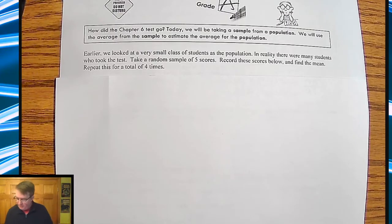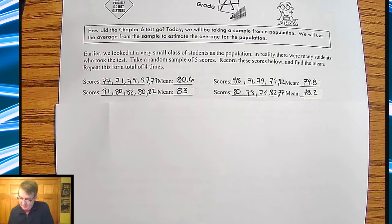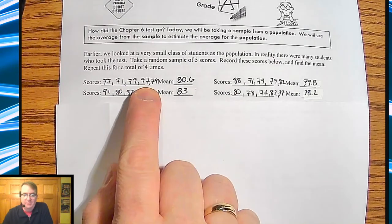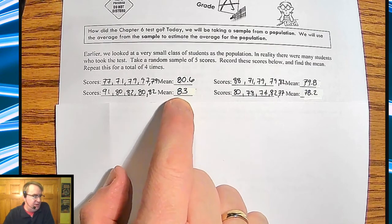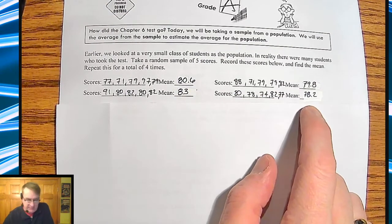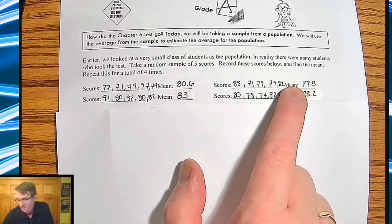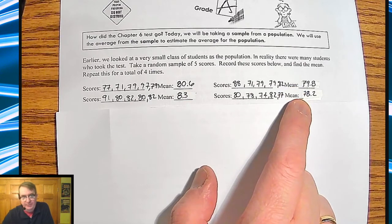And so the four that I went through and I did was this. So my first five pieces of data gave me this. I got an 80.6 as an average. I got 83 as an average, 79.8 and 78.2. Now, when you plot these, plot it to the nearest number. So I'm going to plot this at 81. I'm going to plot this at 83, 80, 78.